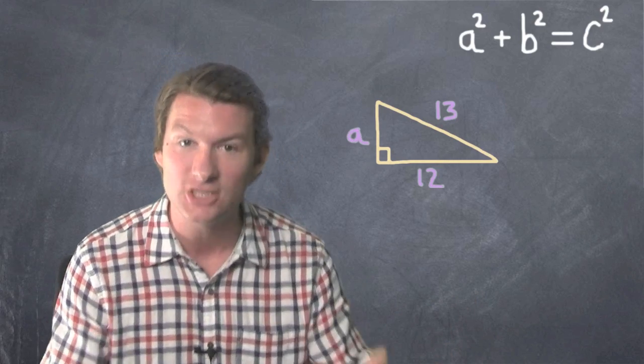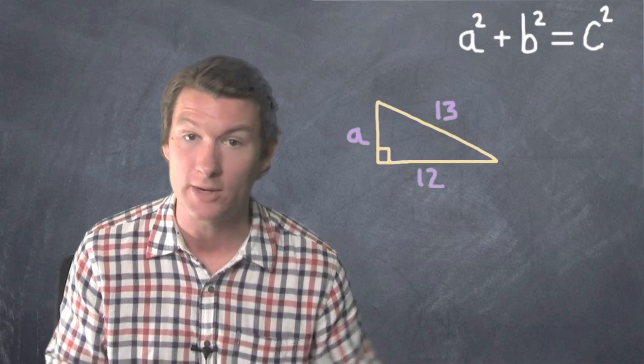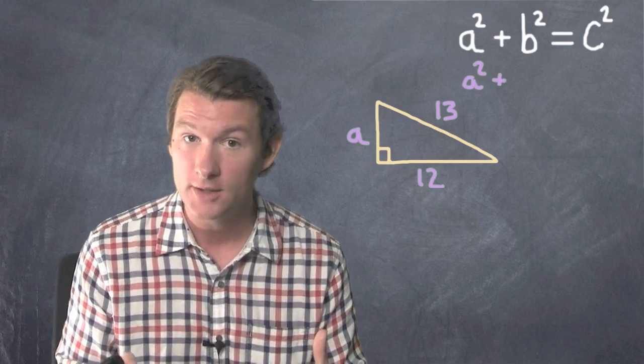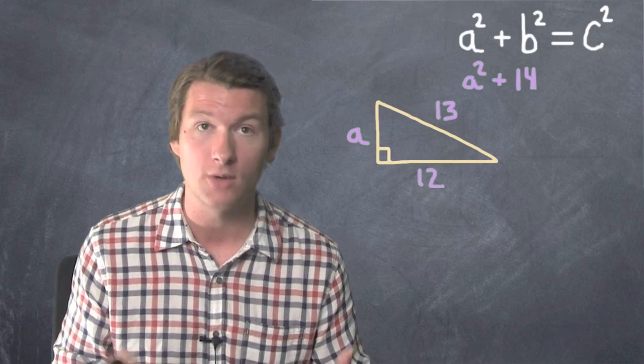So let's use the Pythagorean Theorem. a squared plus b squared equals c squared. We don't know what a is, so we'll just leave it as a squared. We do know that b is 12. So b squared would be 12 times 12, 144.